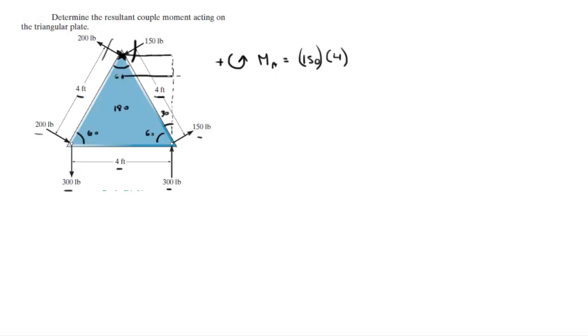So that would be plus you got this 300 force times 4 sine of 30 which is 2.